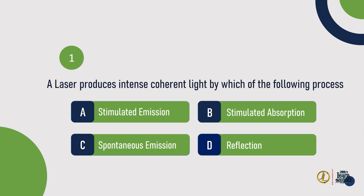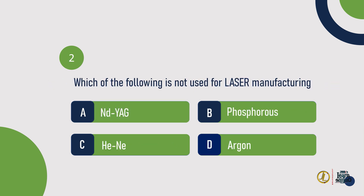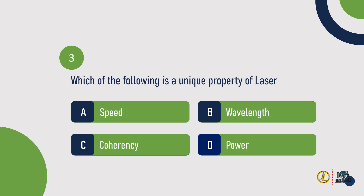Question 1: A laser produces intense coherent light by which of the following processes? Answer: Stimulated emission. Question 2: Which of the following is not used for laser manufacturing? Answer: Phosphorus. Question 3: Which of the following is a unique property of laser? Answer: Coherency.